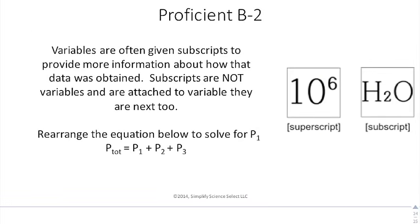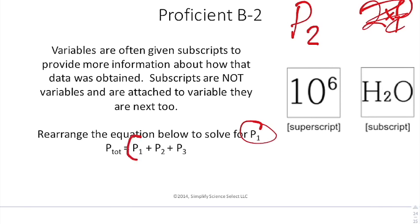Variables are often given a subscript to provide more information about how the data was obtained. Subscripts are not variables and are not attached to the variable they are next to. When you see P2, P2 does not mean 2 times P or anything like that. It just says the second pressure reading. So because of that, we want to rearrange for P1. When you see P tot, which means P total, is equal to P1 plus P2 plus P3, you want to isolate P1.